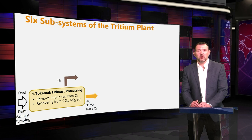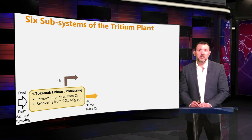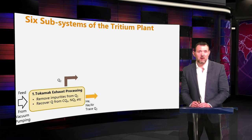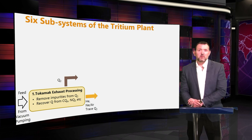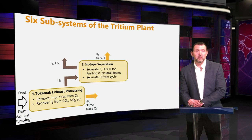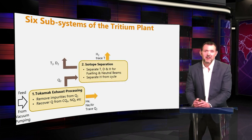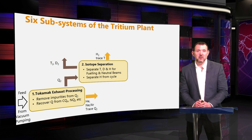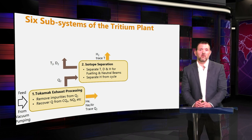The first subsystem is the Tokamak Exhaust Processing System (TEPS). This receives exhaust from the reactor via the vacuum pumping systems and has two primary functions: to separate impurities from the hydrogen isotopes, and to recover hydrogen from impurity gases such as methane and ammonia. It produces two product streams — a purified hydrogen isotope stream and an impurity stream. Following the hydrogen stream, it goes to the Isotope Separation System, where we separate the isotopes of hydrogen — tritium, deuterium, and a small stream of protium with traces of tritium.